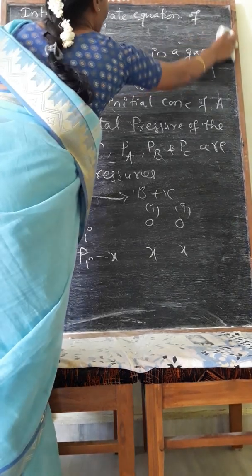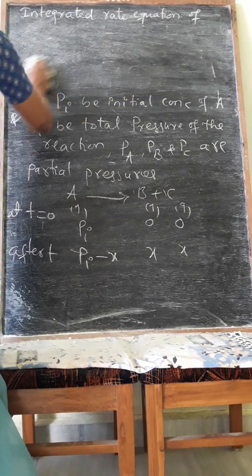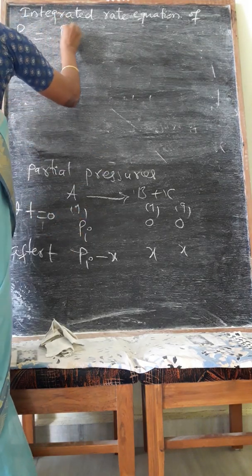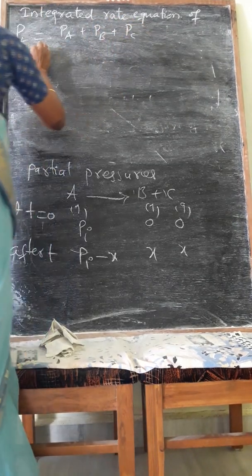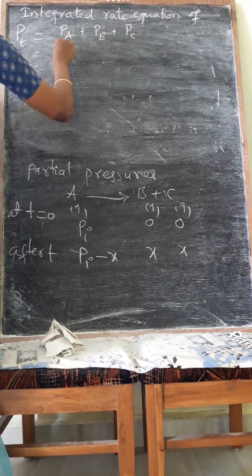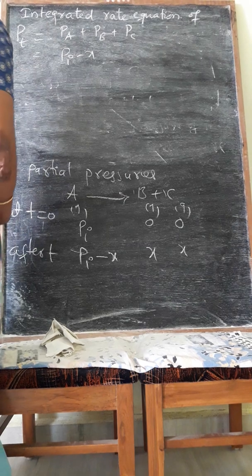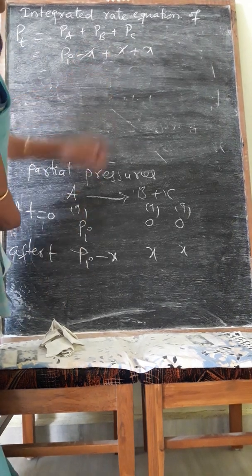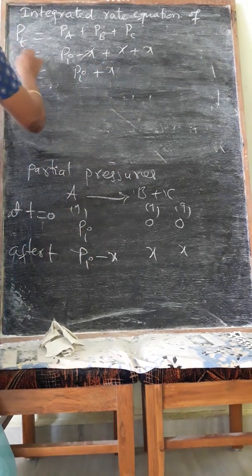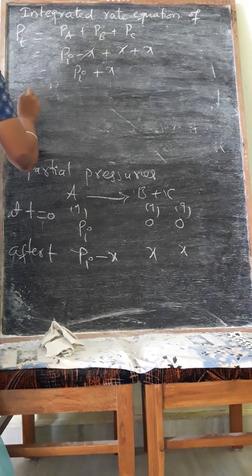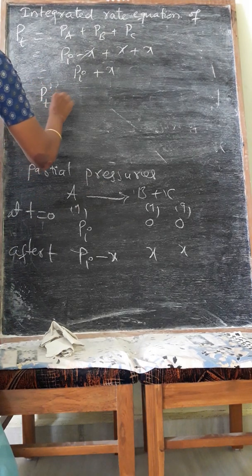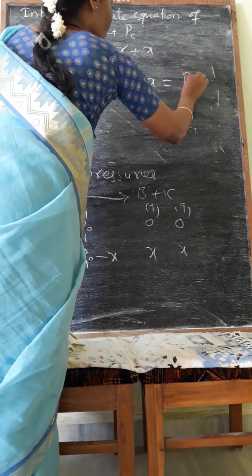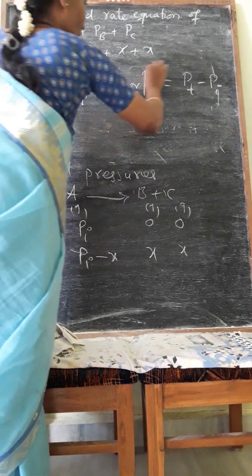Total pressure PT equals PA plus PB plus PC. PA is PI minus X, PB is X, and PC is X. Therefore, on simplification, minus X and plus X cancel, giving PT equals PI plus X.